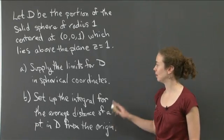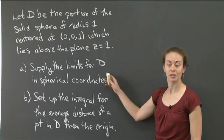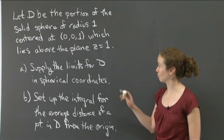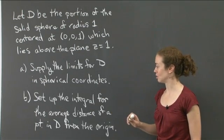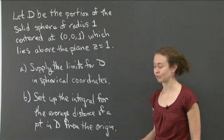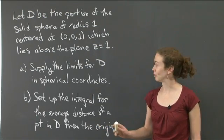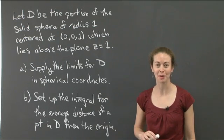And then I would like us to just set up the integral for the average distance of a point in D from the origin. So there are two parts to this problem. The first is to determine what values of rho, theta, and phi describe this solid region D. And then second is just set up the integral for the average distance of a point in that region from the origin. So why don't you pause the video, work on those, and then when you're ready to see my solutions, you can bring the video back up.